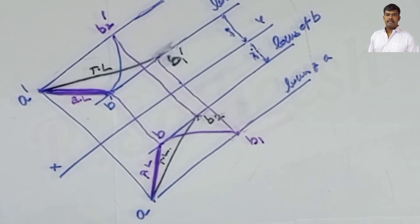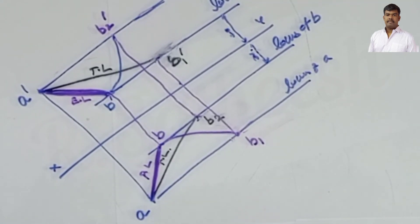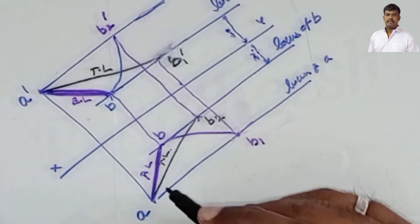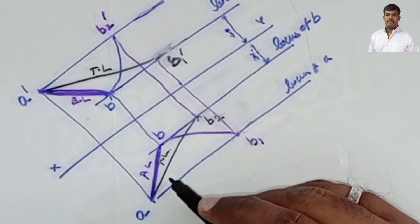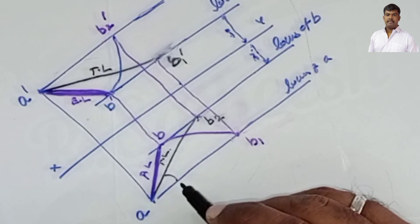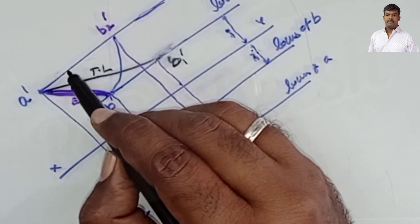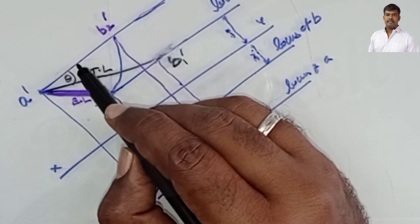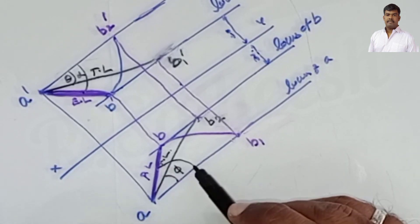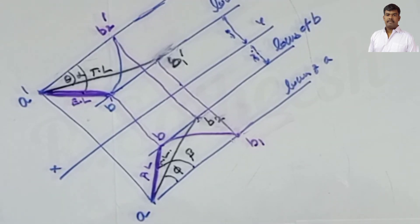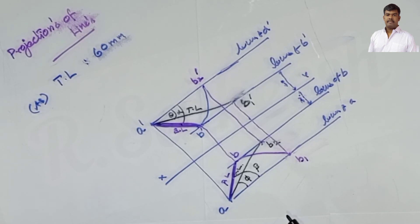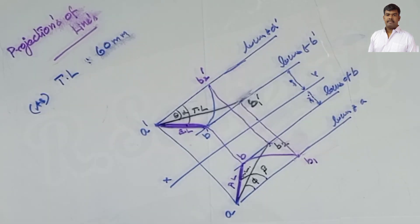Joining A and B gives the plan length, and joining A-dash and B-dash gives the elevation length. This problem only asks to draw the projection, but if the same problem also asks to determine the inclinations - angle phi with VP, angle theta with HP, angle alpha for the front view, and angle beta for the top view - we can easily determine them using the same procedure. The key is knowing from which locus lines to which locus lines you draw the arcs and vertical lines. This completes the procedure.